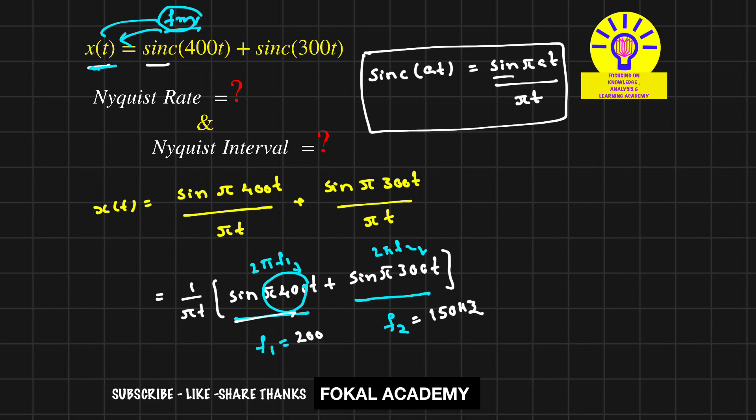Here there are 2 signals. Which frequency is the highest? That is called the message frequency. Here 200 Hz is the highest, so fm = 200 Hz.